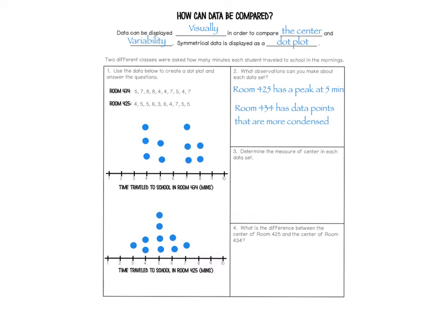Question three says: determine the measure of center in each data set, which means we are going to calculate the mean. Pause the video, calculate the mean of room 434 and 425, and then press play to move on. So room 434 has a mean of 5.9, and room 425 has a mean of 5.